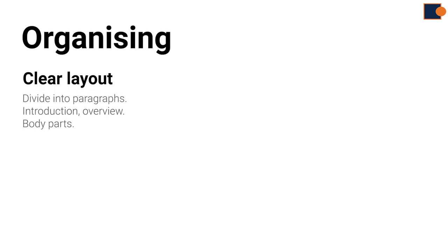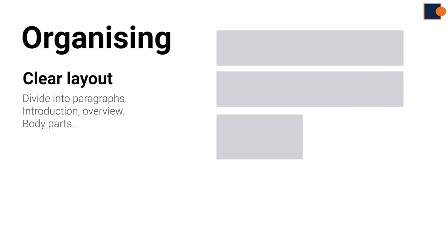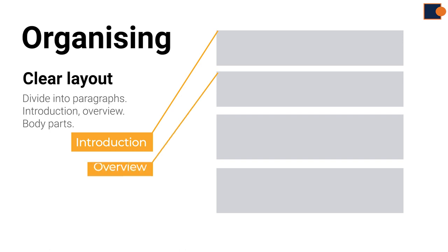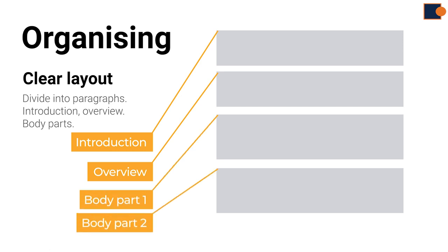Once you have identified key features, you should know how to organize them. Make a clear layout by leaving some space between paragraphs. Each paragraph must have its own purpose, such as introduction, overview, and body 1 or body 2, depending on how you would like to present the data.